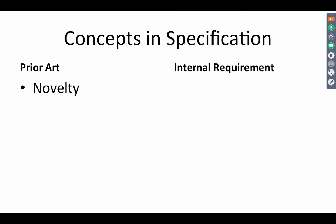Novelty is a requirement where the novelty is checked with the prior art. Inventive step is again a requirement where the invention has to be checked with the prior art. Utility — the use of the invention — is something which can be demonstrated in the future, but it also has to be understood in relation to the prior art.